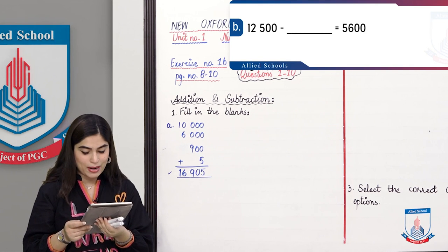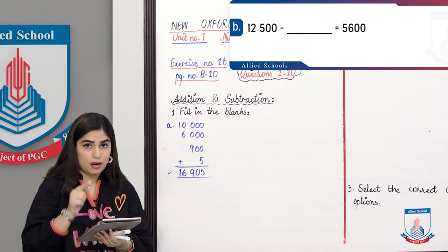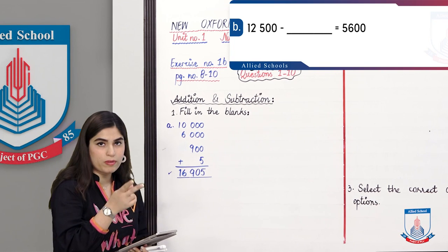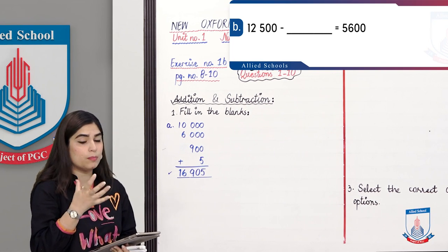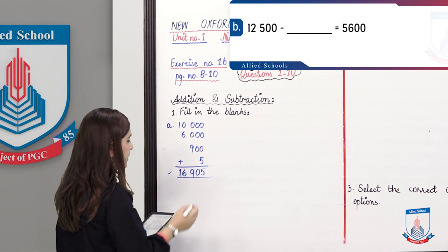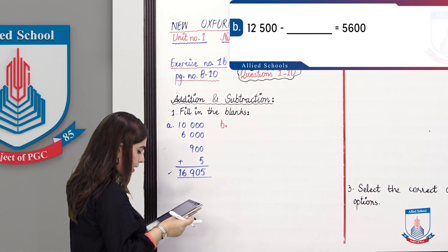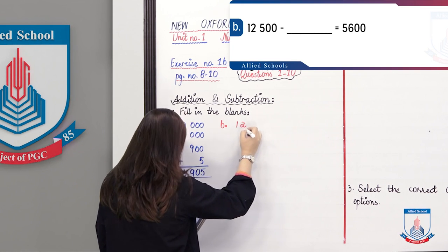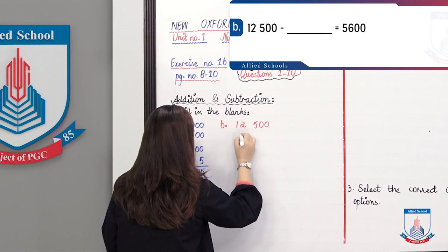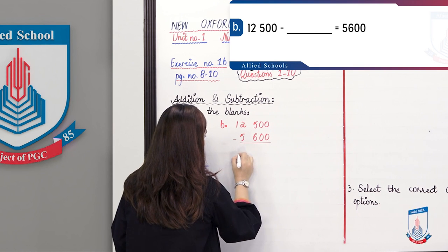Part B: 12,500 minus blank equals 5,600. You have to find the value that when subtracted from 12,500 gives us 5,600. If we have two values and we subtract one from the bigger number, we get the other. I will use different colors so you know which question part it is. Write it vertically: 12,500 minus 5,600.